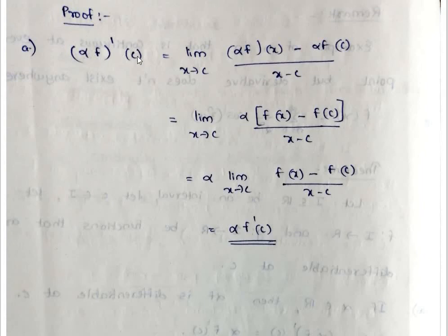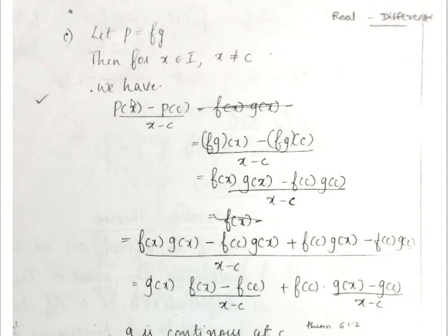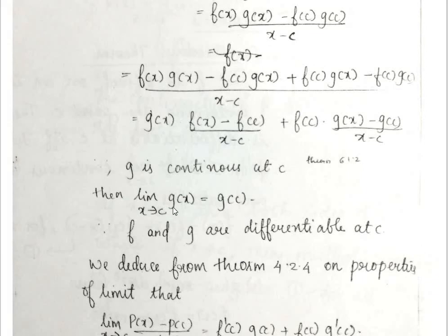For the proof of scalar multiplication: alpha × f(x) - alpha × f(c) divided by (x - c), taking alpha as a common factor gives alpha times [f(x) - f(c)] / (x - c), which in the limit gives alpha × f'(c). For the product rule: [f(x)g(x) - f(c)g(c)] / (x - c). Adding and subtracting f(c)g(x) gives f(c)[g(x) - g(c)] / (x - c) plus g(x)[f(x) - f(c)] / (x - c). Since g is differentiable at c, g is continuous at c, so the limit as x tends to c of g(x) equals g(c), completing the product rule derivation.